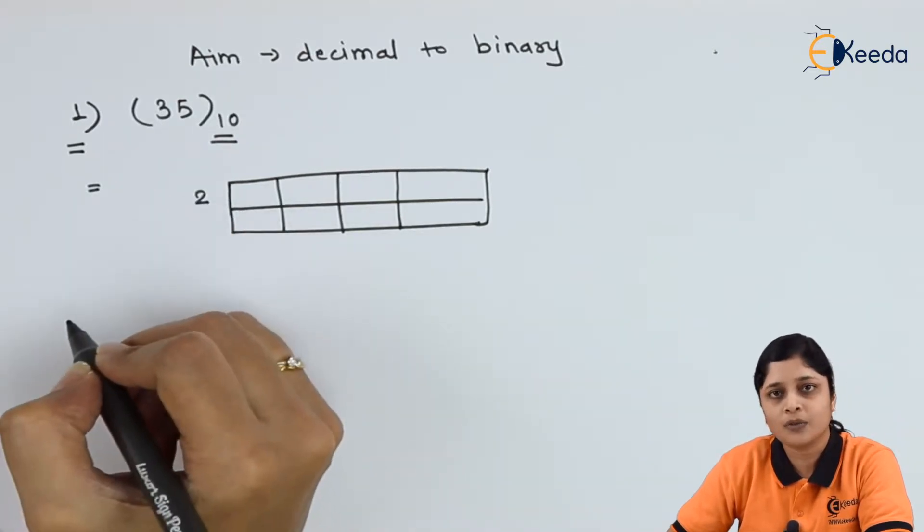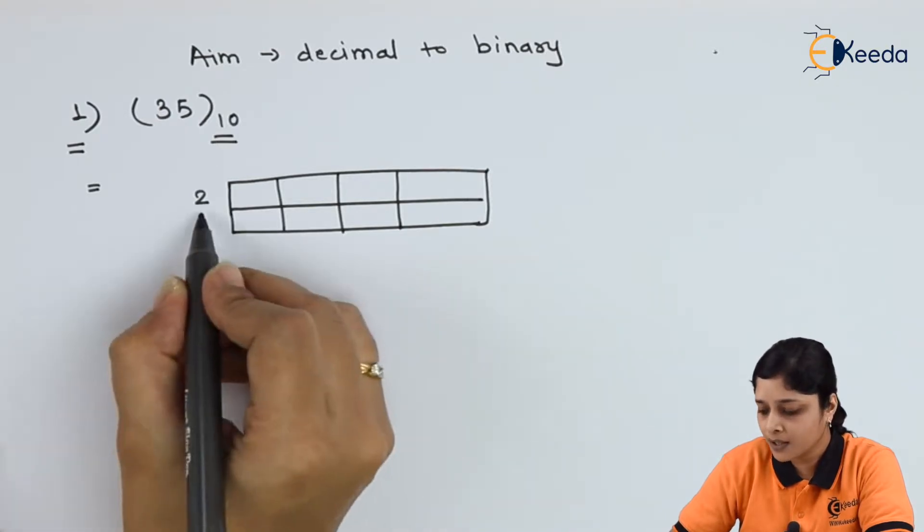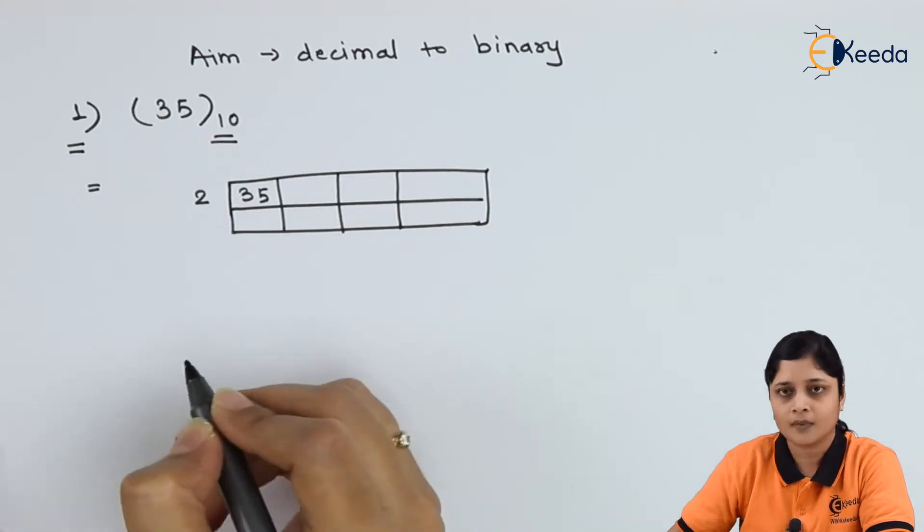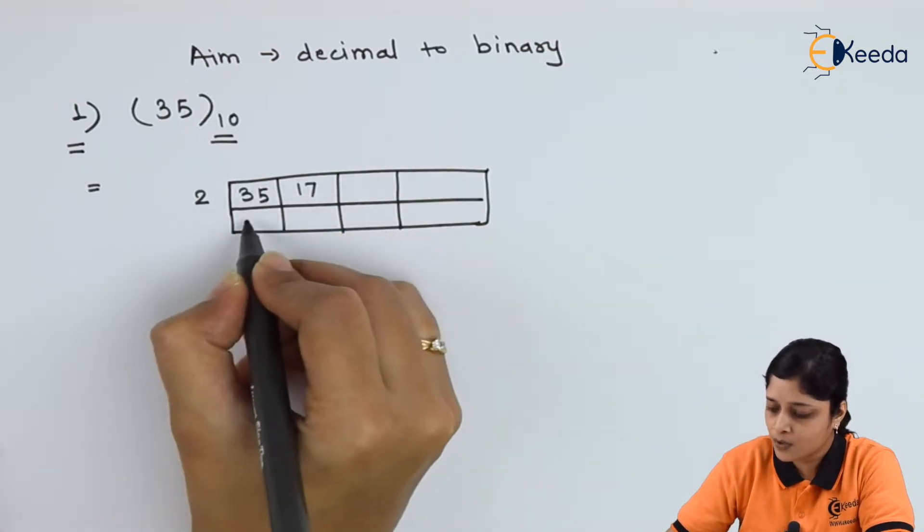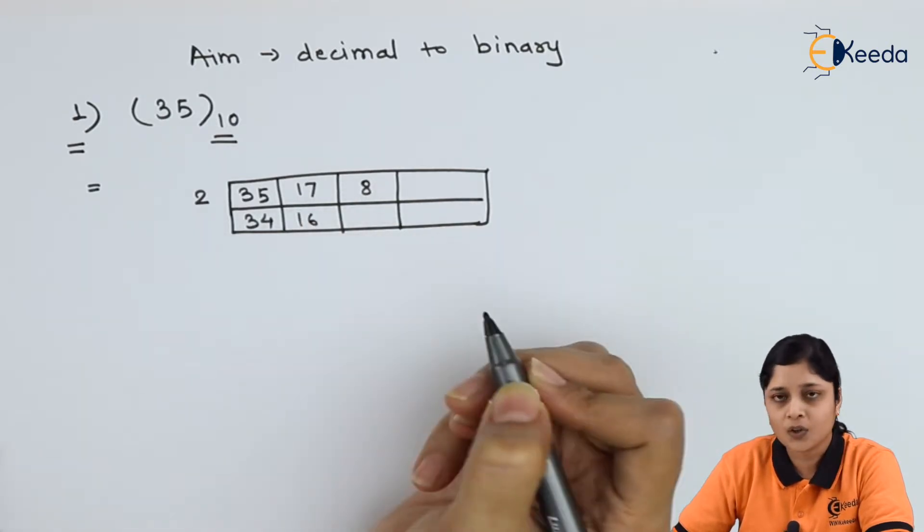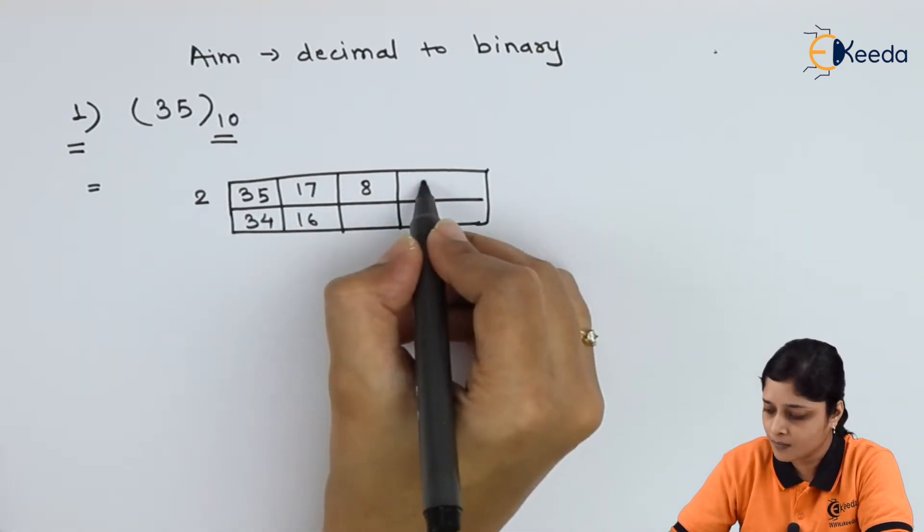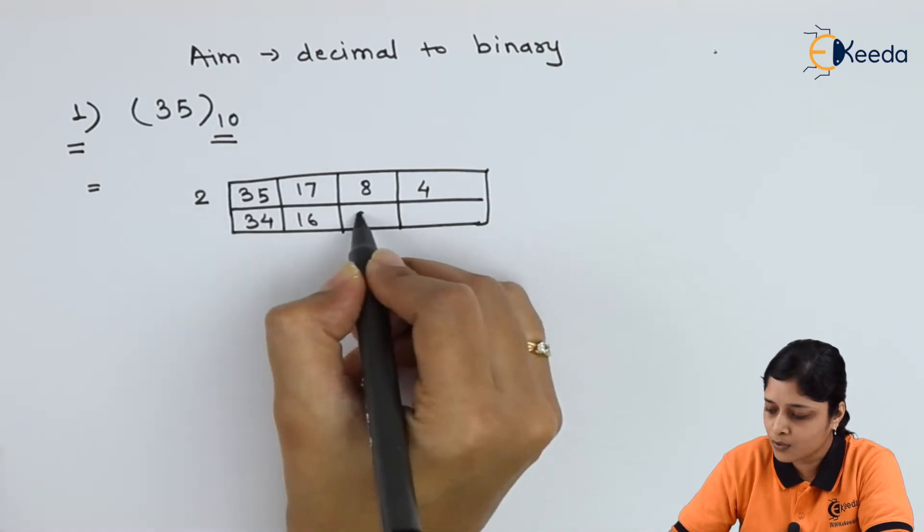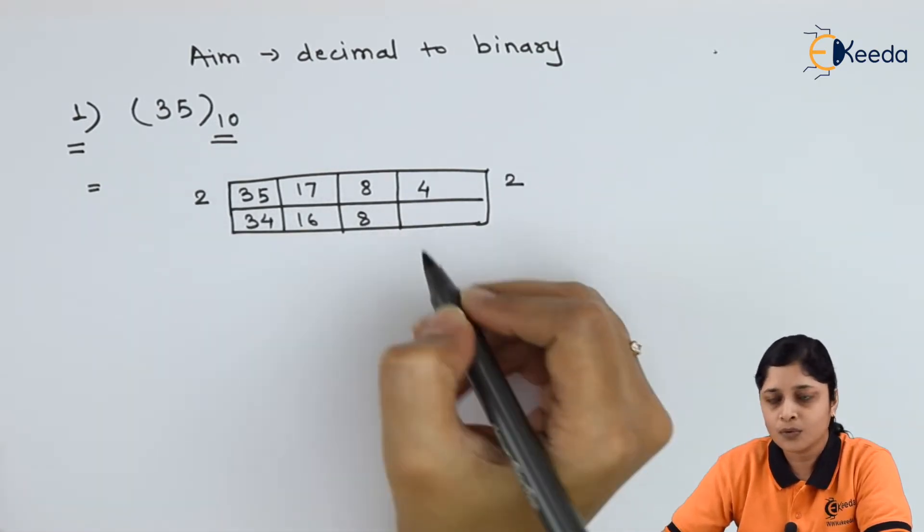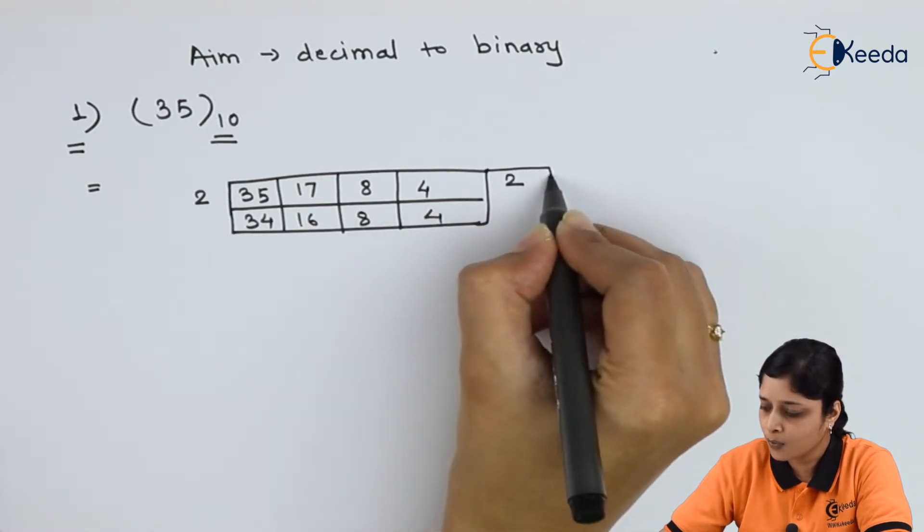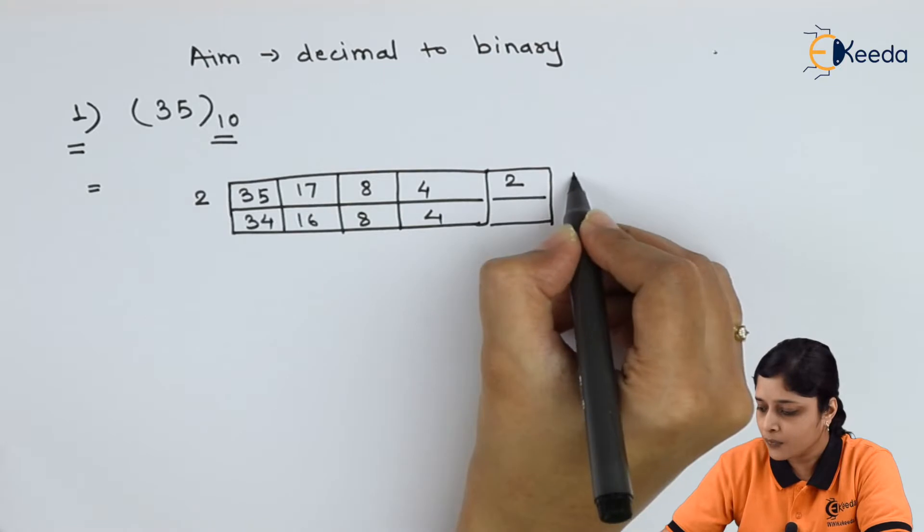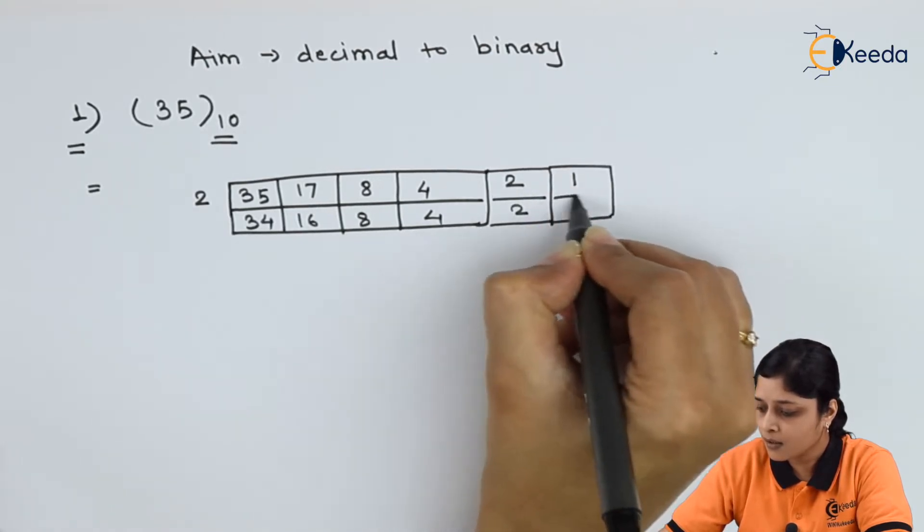Your aim is to convert it into binary. That's why write 2, 17 to the 34, 8 to the 16, 4 to the 8, 2 to the 4, and 1 to the 2.